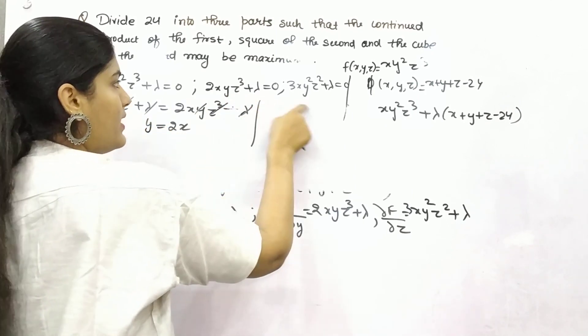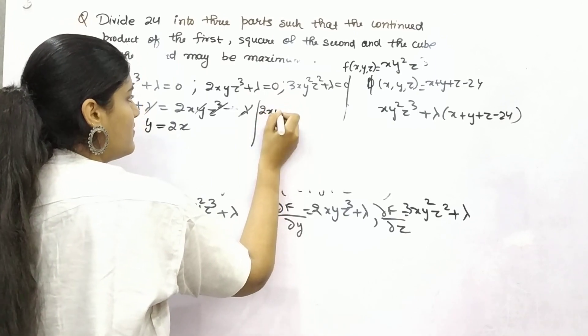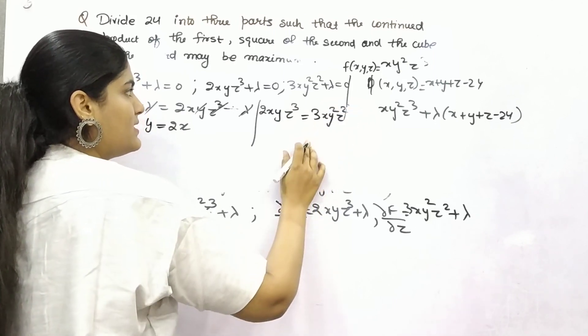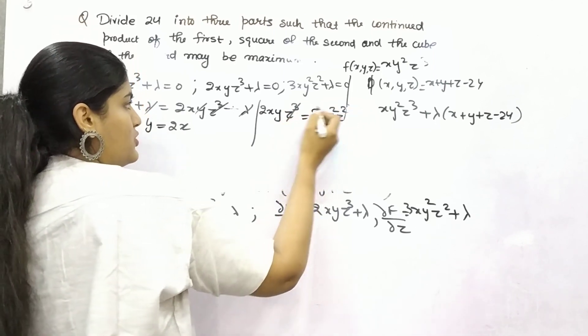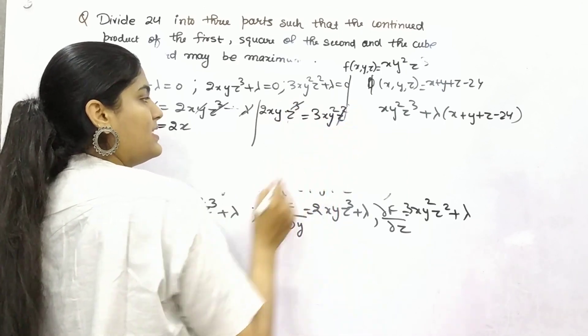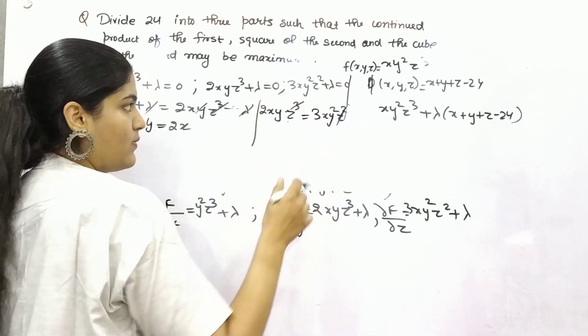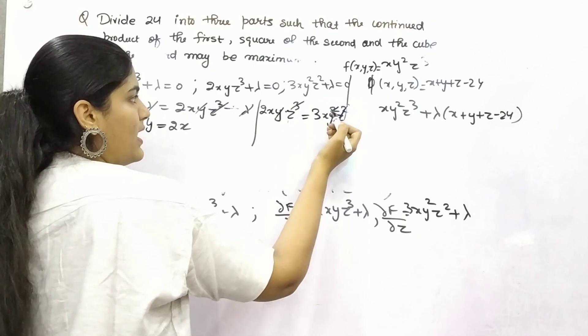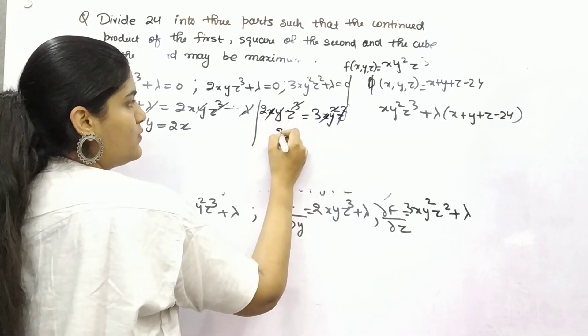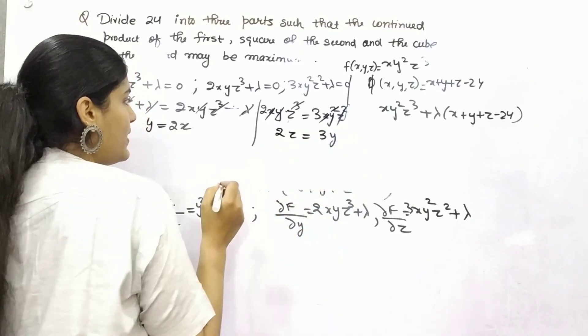Again, you can equate these two. So 2xy z³. Lambda will be cancelled with lambda. What is left? z² will be cancelled with z², y with y, x with x. So what is left? 2z is equal to 3y.